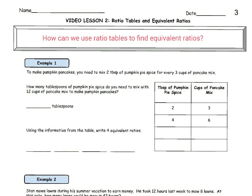Welcome everyone. Video lesson number two, Mr. Pasco here. Today we are going to answer the question: how can we use ratio tables to find equivalent ratios? In example number one, we have a vertical ratio table where we're going to see relationships between pumpkin pie spice and pancake mix. And in example number two, we have a lawn mowing business that we are going to look into, and this is going to be done with a horizontal ratio table.